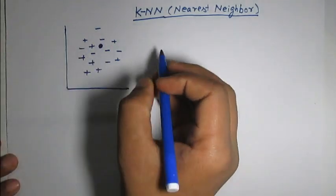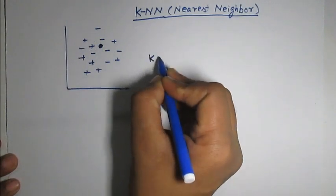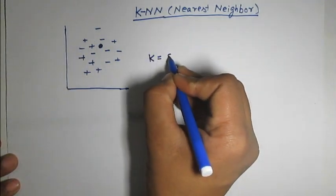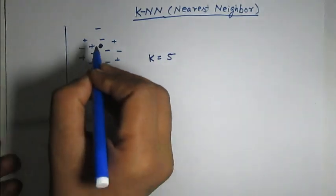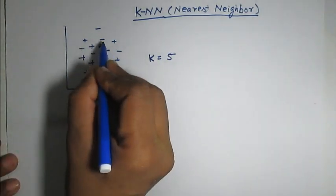And how many neighbors we are going to consider will depend on the value of K. For example, this value is chosen to be 5. So, we will consider 5 nearest neighbors to this point.